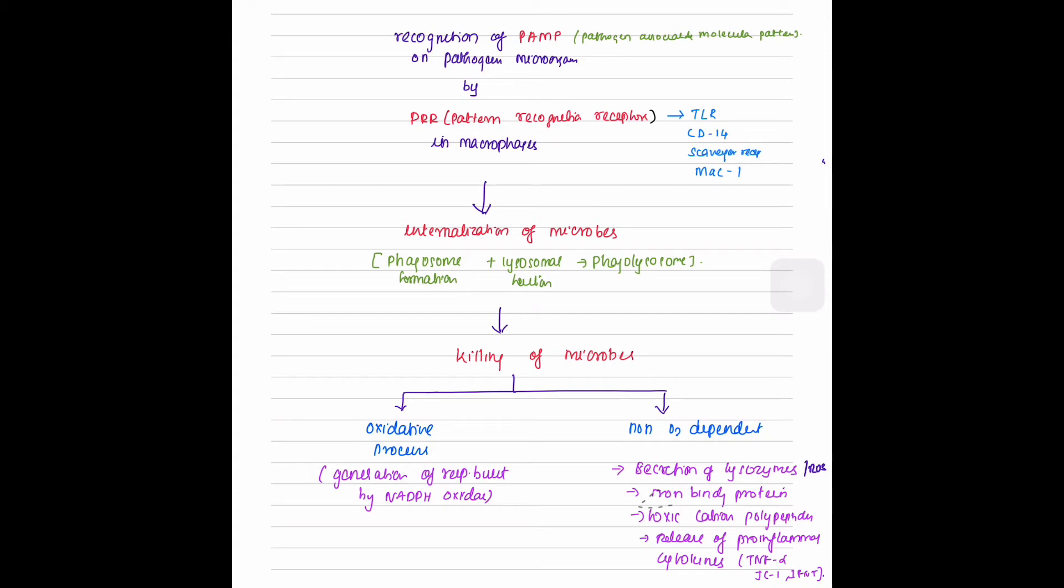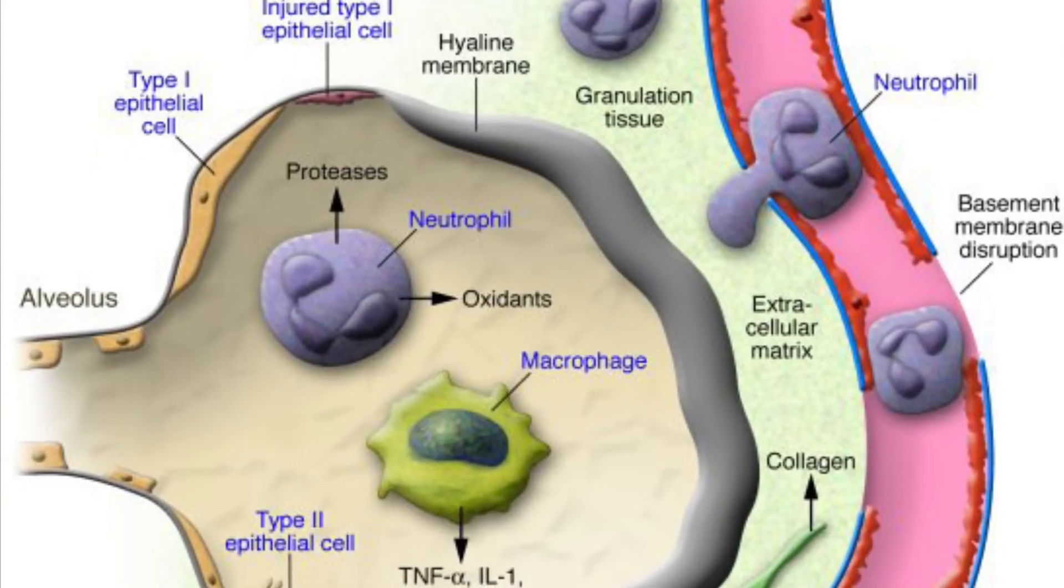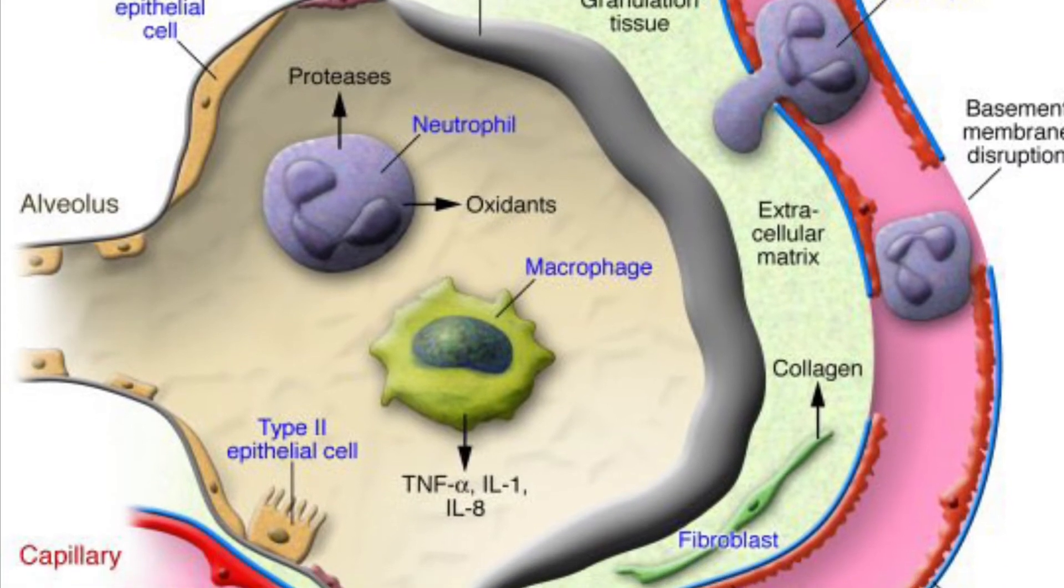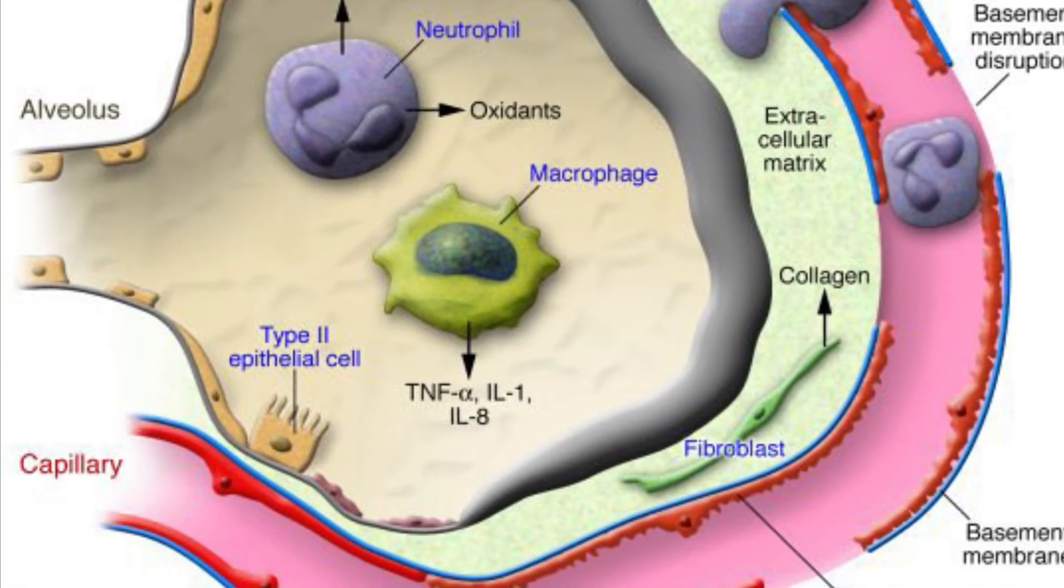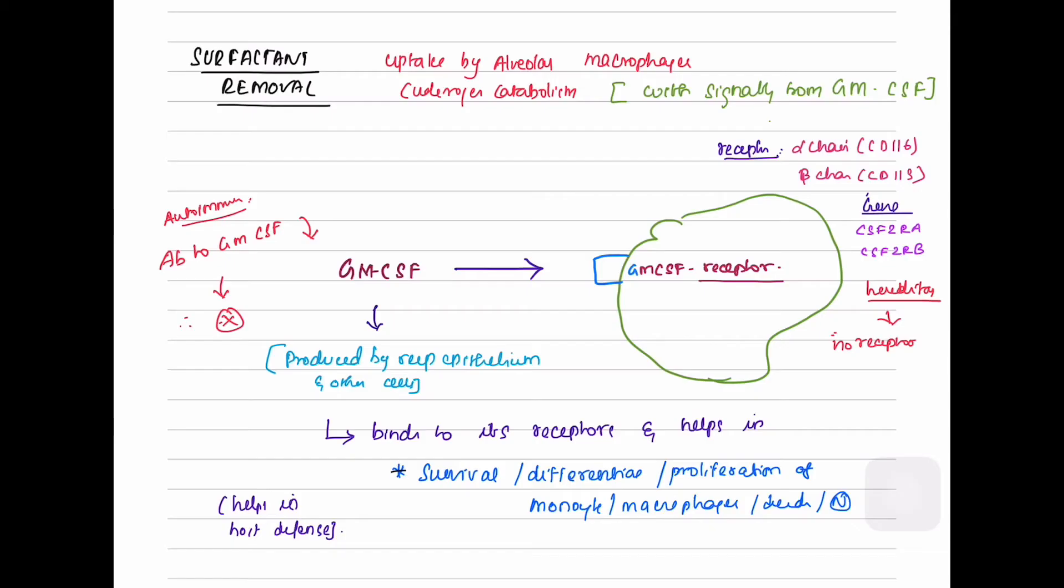The non-oxygen dependent processes include secretion of lysosomes, iron-binding protein, toxic cationic polypeptide, and release of pro-inflammatory cytokines like TNF-alpha, interleukin-1, and interferon. During an active inflammatory reaction, certain pro-inflammatory cytokines play an important role in tissue repair and fibrosis.